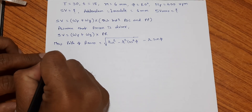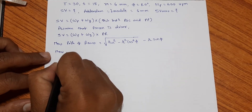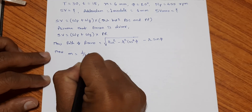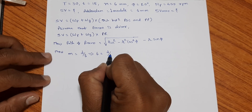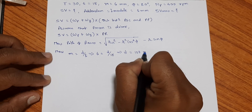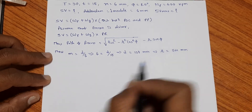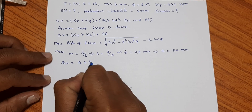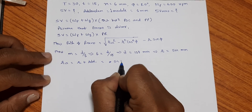We now calculate the pitch radius and addendum radius of the pinion. Module m = diameter/number of teeth, so pitch diameter d = m × t = 6 × 18 = 108mm, giving pitch radius r = 54mm. The addendum radius ra = pitch radius + addendum = 54 + 6 = 60mm.